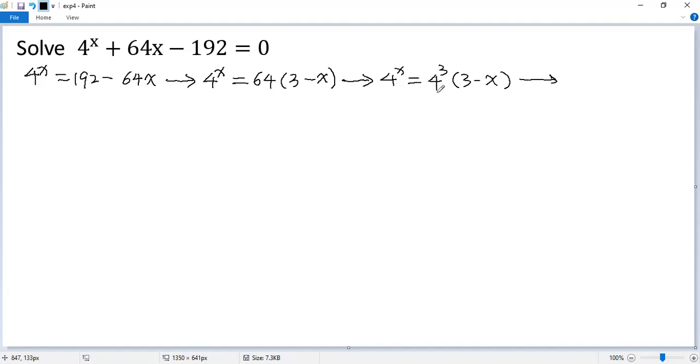Now both sides divided by 4 cubed, so we get 4 to the power x over 4 to the power 3 equals 3 minus x. Using exponent rule, the left side becomes 4 to the power x minus 3, the right side 3 minus x.